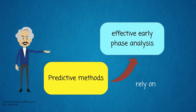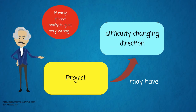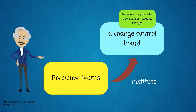Predictive methods rely on effective early phase analysis, and if this goes very wrong, the project may have difficulty changing direction. Predictive teams often institute a change control board to ensure they consider only the most valuable changes.